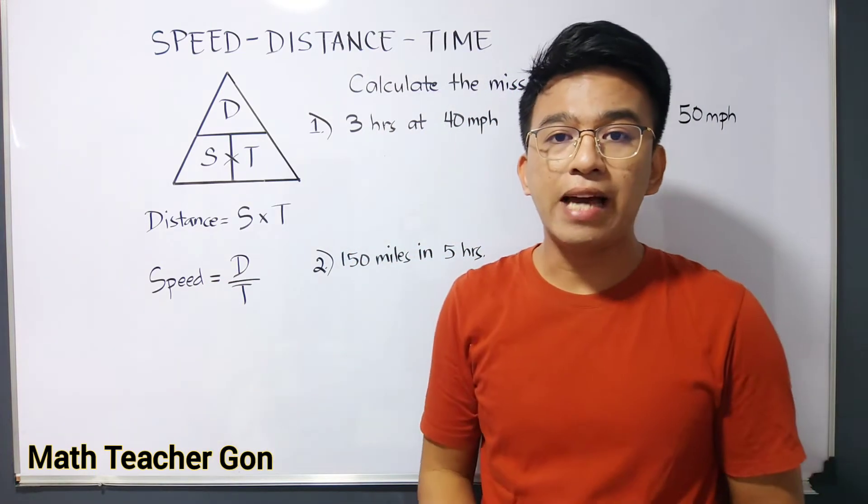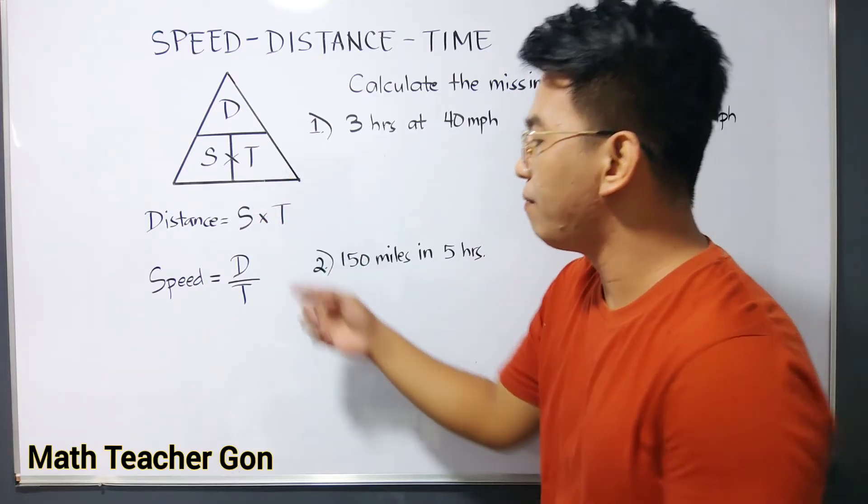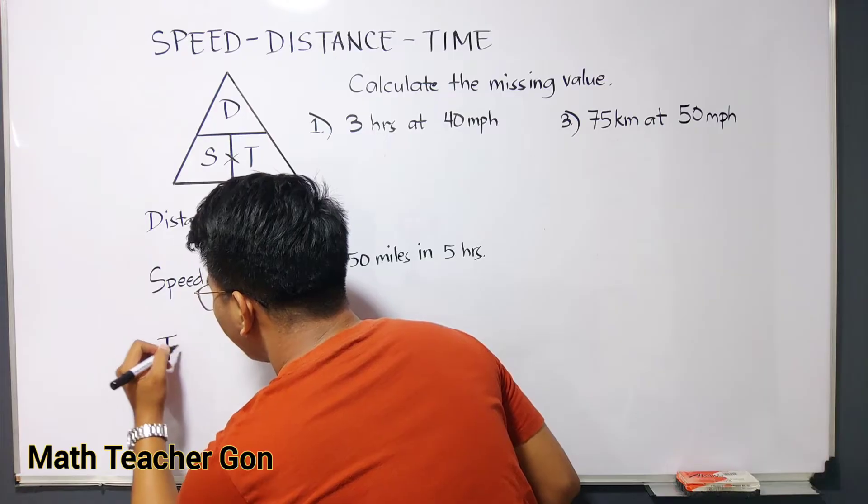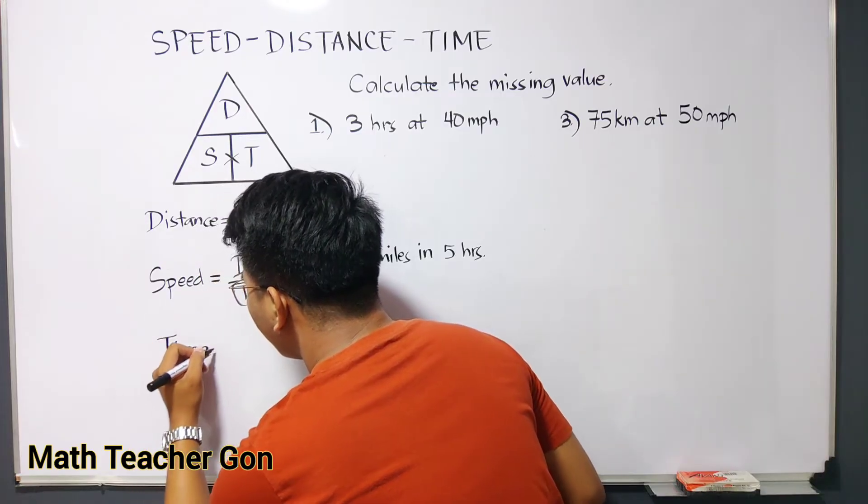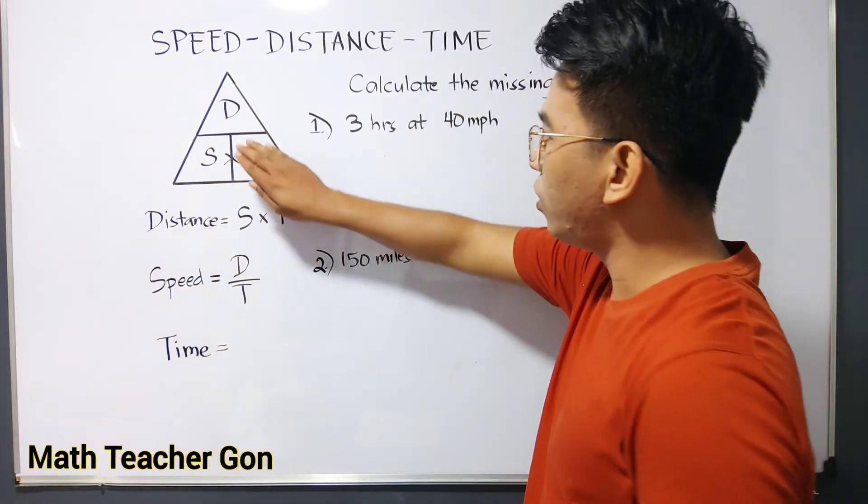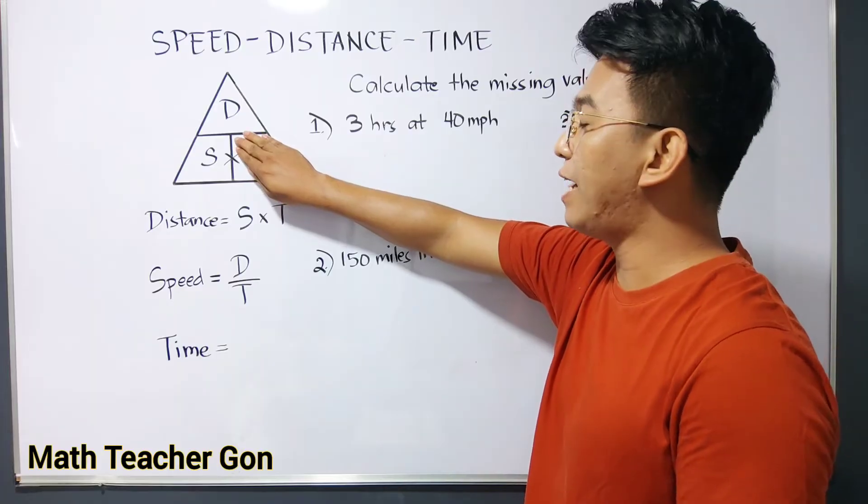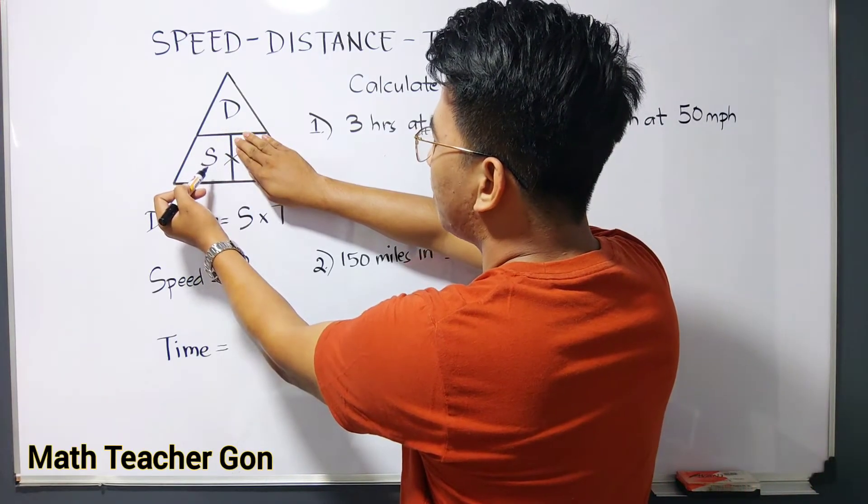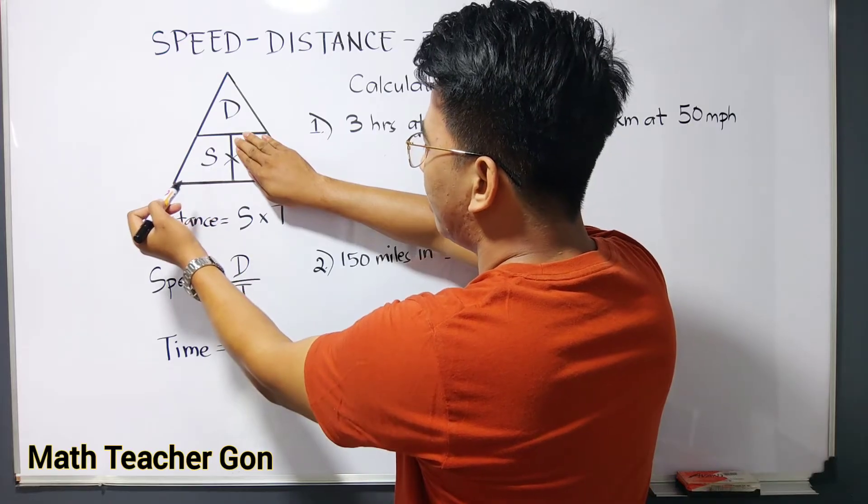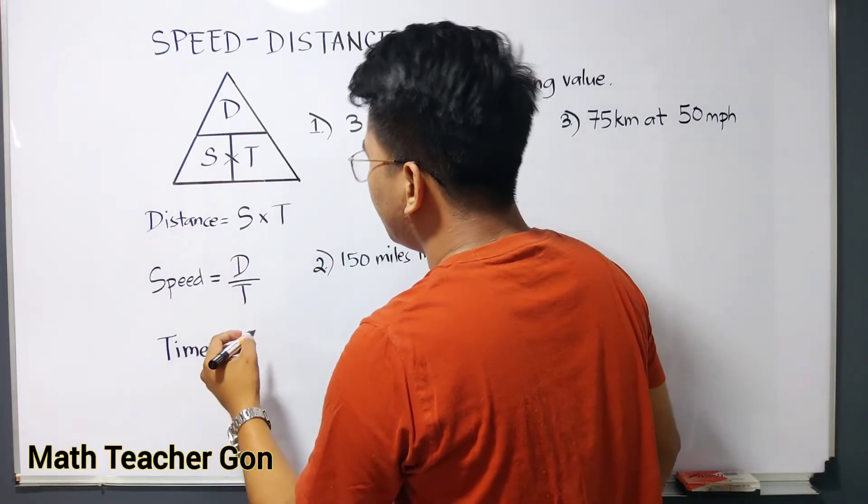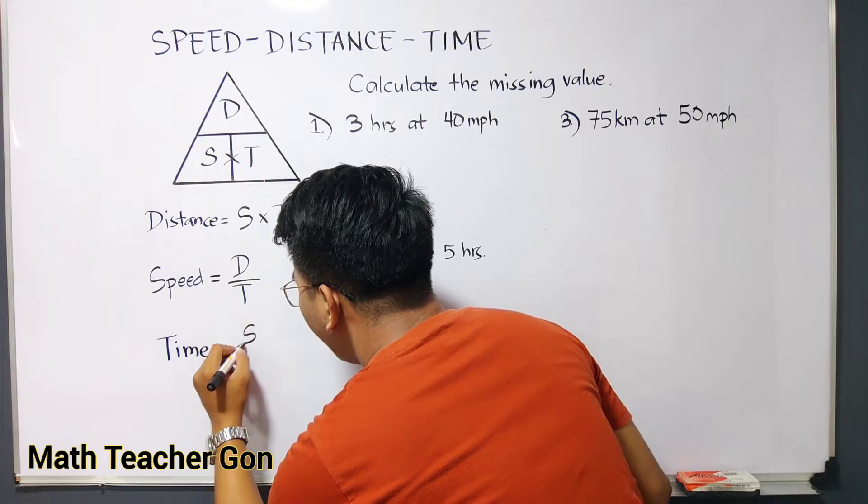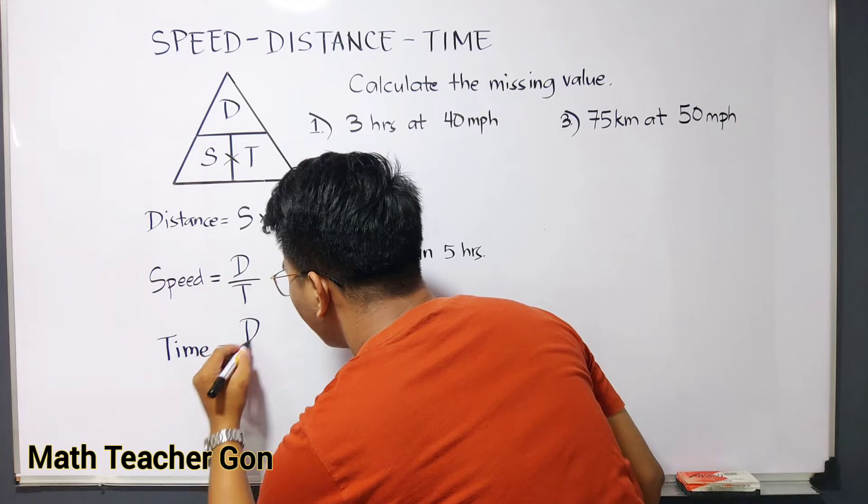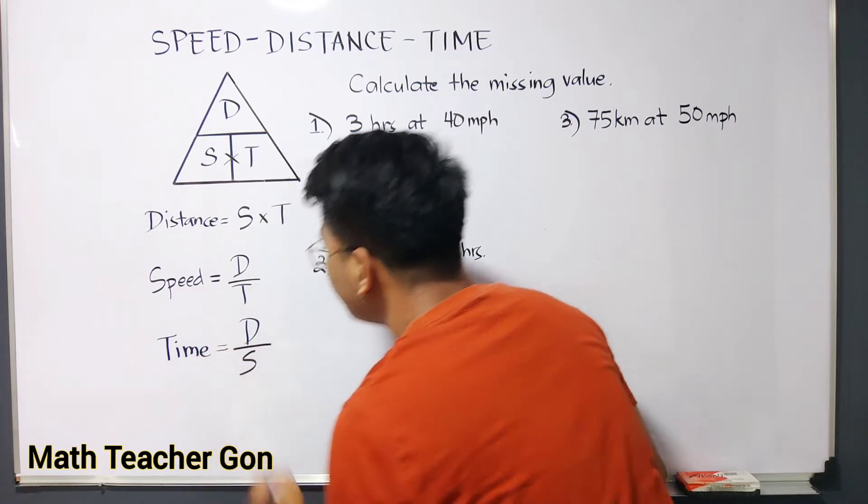And lastly, if you will be calculating for the time, you have your time, which is T. And that is equal to, you will cover the variable T or the letter T, that is equal to distance over speed. So we have D over speed.